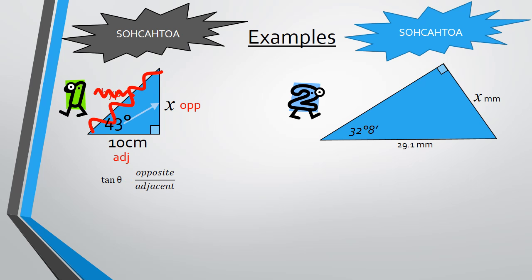We're going to substitute the information that we know. We know that theta is going to be replaced by 43. Opposite will be x and adjacent will be 10. So tan 43 equals x over 10. An equation with a fraction in it. Multiply both sides by the denominator. And we end up with 10 tan 43 degrees equals x. Now if we type that in our calculator, we get x as 9.33 correct to two decimal places.